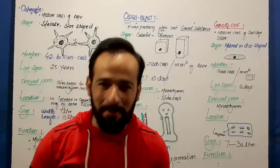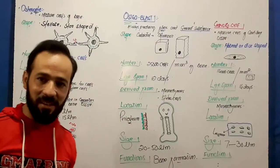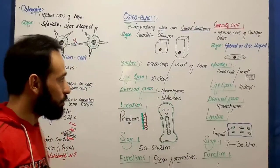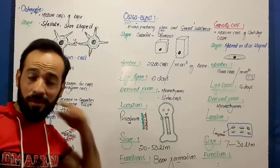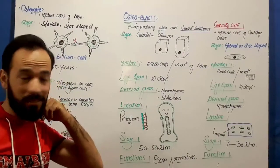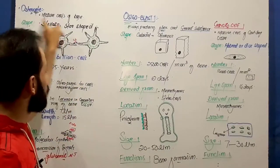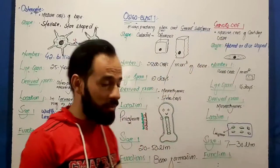Hello my dear friends, welcome back. We are discussing about the cells of the connective tissue. Up to here, these were the three lectures regarding the cells: the osteocyte, the osteoblast, and the chondrocyte.